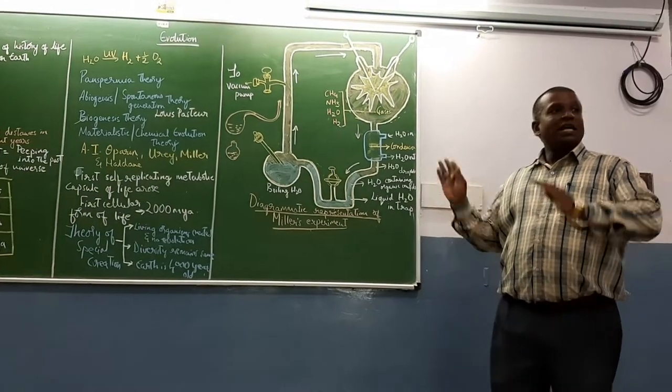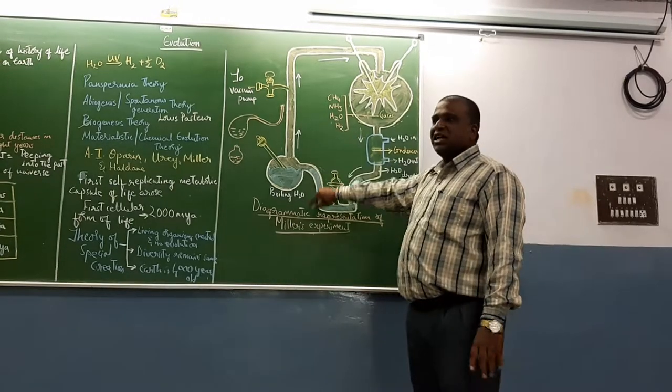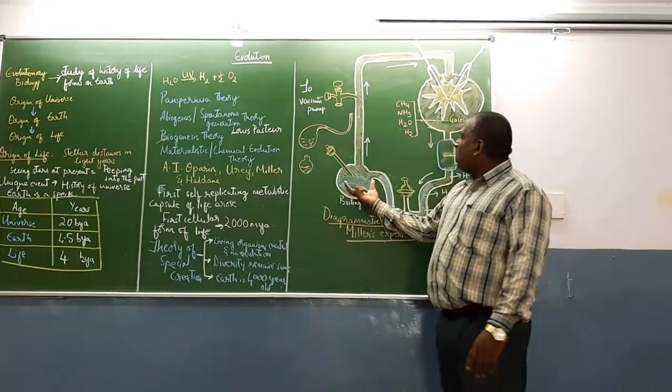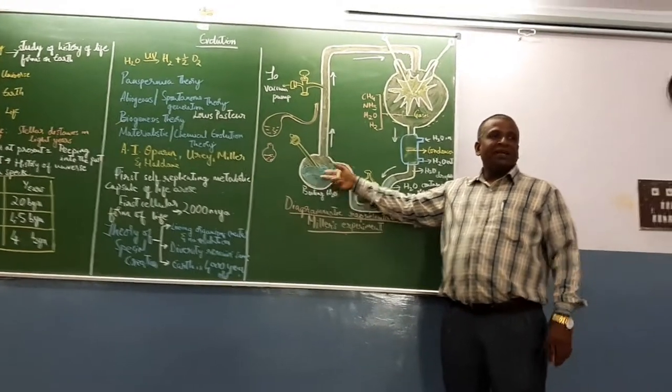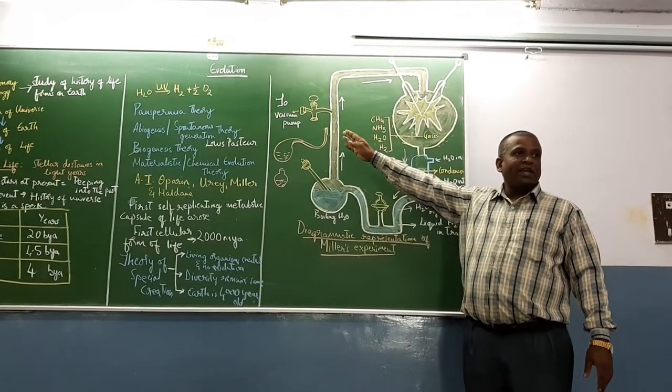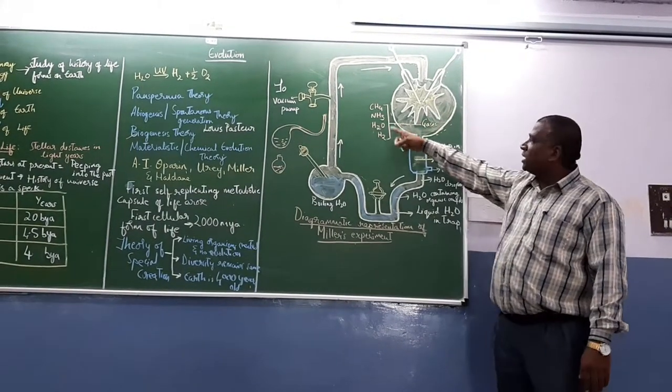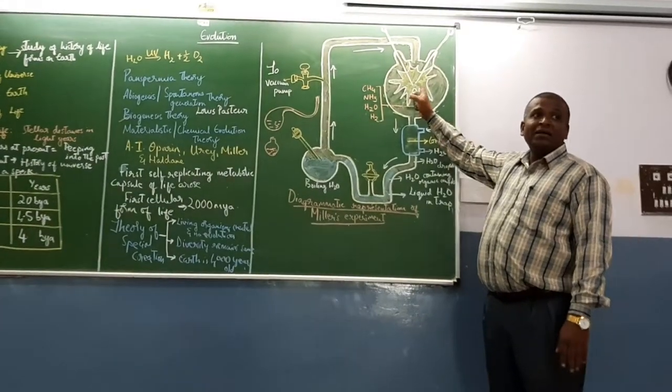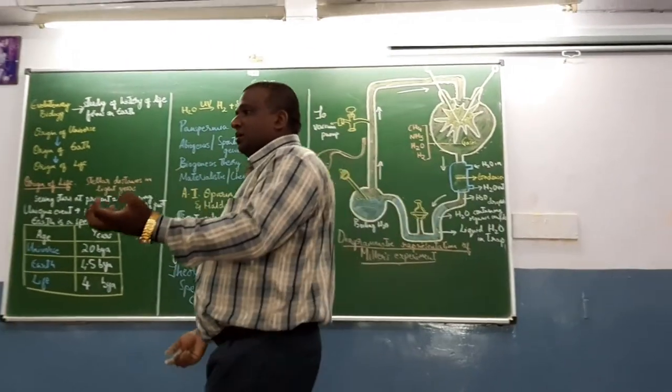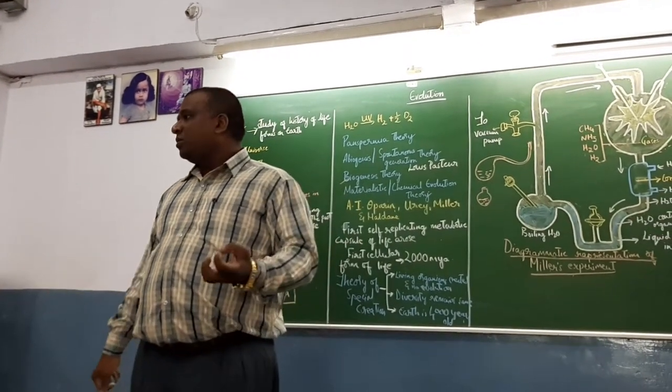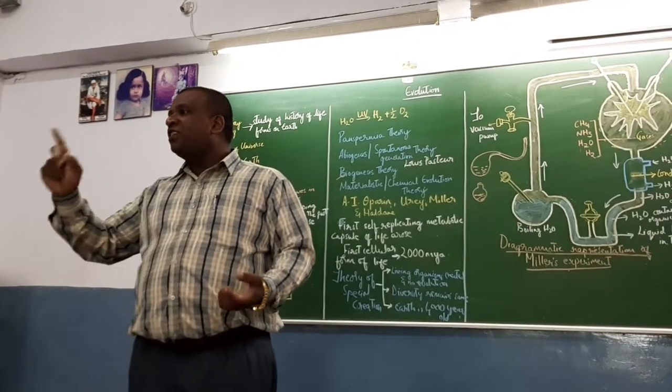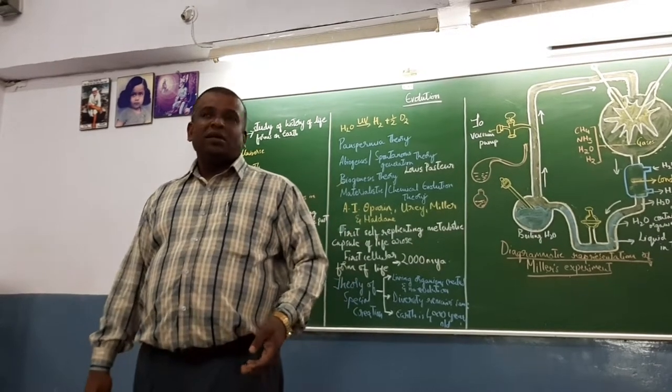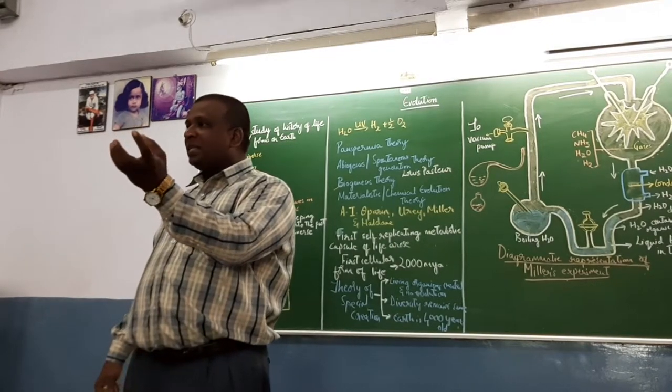He removed all the air from this apparatus through vacuum pump. One region of the flask has water. After the complete setup, they removed the air through vacuum. In this chamber, there are gases - primitive atmosphere gases. Methane, ammonia, water vapor, hydrogen gas are there. During the cooling down of earth, billions of years, thousands of years, there was continuous rain. Little drops of water formed the mighty oceans. All the cavities and depressions were filled with water - they formed oceans, seas, rivers, lakes. It was a hot ball of fire initially, then started slowly cooling down.